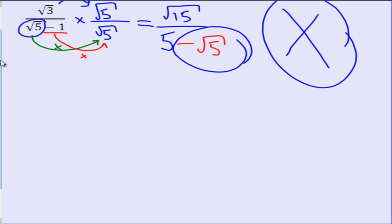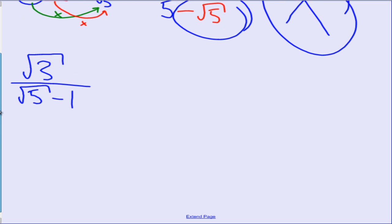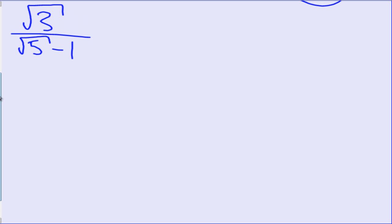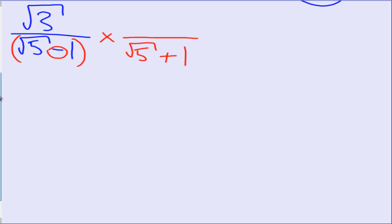Starting again. We have the square root of 3 divided by the square root of 5 minus 1. What we need to do is recognise the denominator as a whole. The sneaky skill we can use to rationalise the bottom is to multiply by the same numbers — we still need a square root of 5 and we still need a 1 — but instead of a minus sign, we multiply by a plus sign. That is the only thing we've changed: we've swapped the minus sign for an addition sign. And like always, whatever you multiply the bottom by, you must multiply the top by. That is the key trick that allows us to rationalise this denominator.